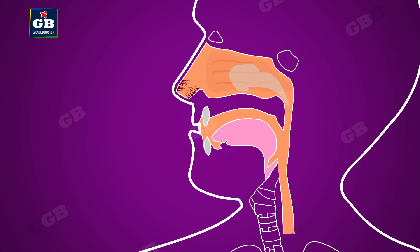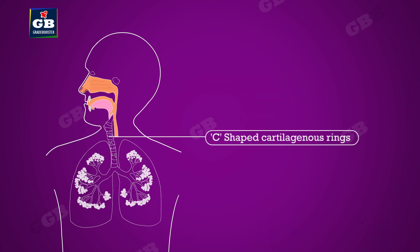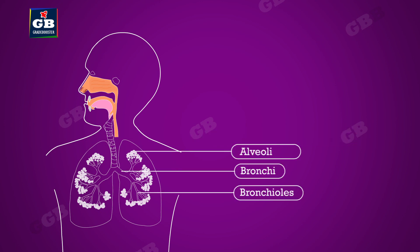From here the air passes through the throat into the lungs. The throat is supported by C-shaped cartilaginous rings to prevent it from collapsing.